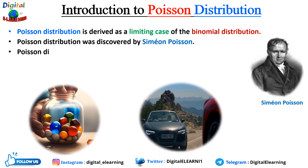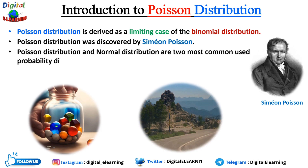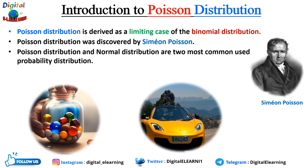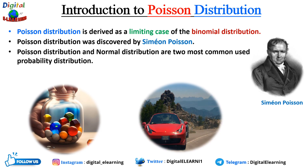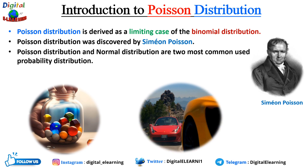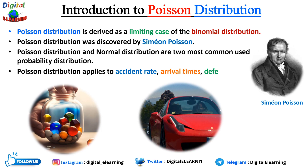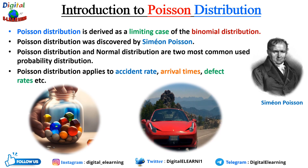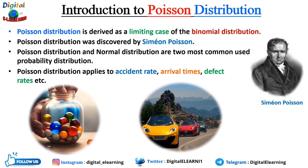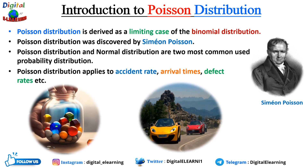The Poisson distribution and the normal distribution are the two most commonly used probability distributions in statistics. Poisson distribution applies to accident rates, arrival times, defect rates, the occurrence of bacteria or fungus in the air, and many other areas of day-to-day life.